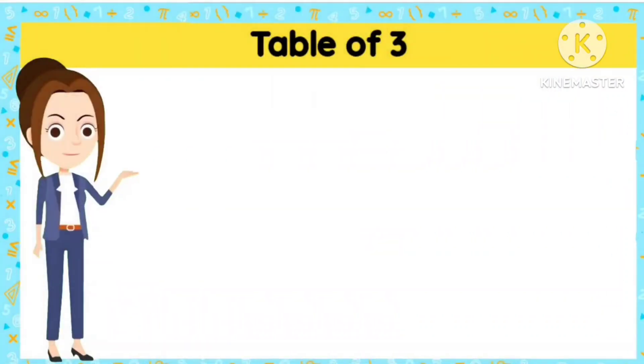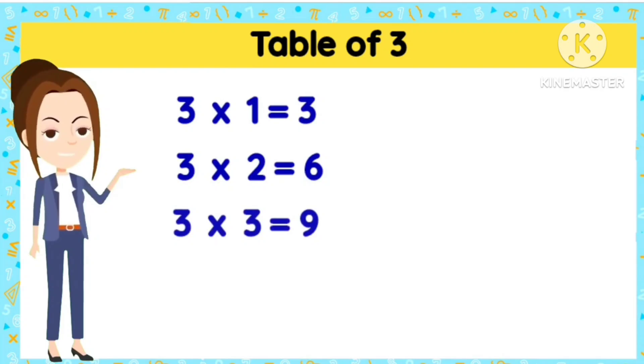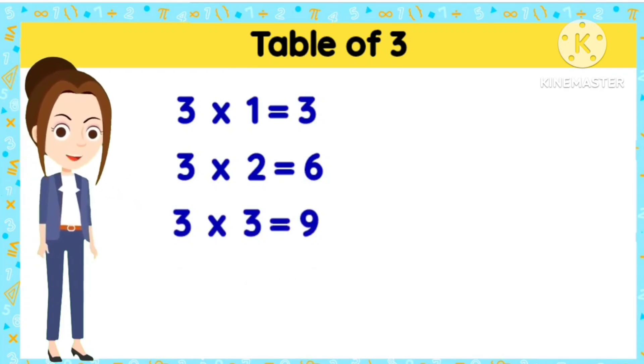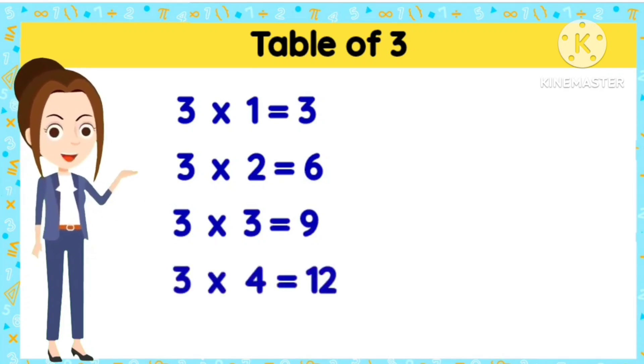Now let's recap the table again. 3 1s are 3. 3 2s are 6. 3 3s are 9. 3 4s are 12.